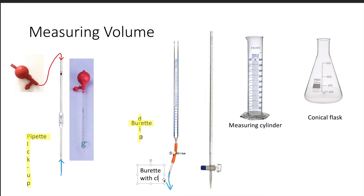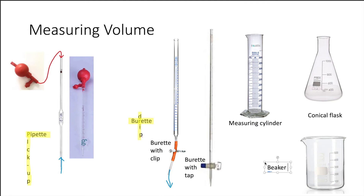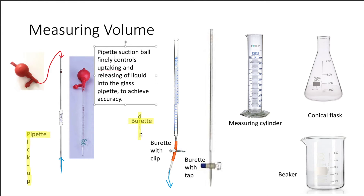For the buret, you fill it to the top where there is a zero mark, meaning you have released zero cm³ of liquid. As you release the liquid, the meniscus at the final point shows how much liquid you have released. If your school lab has the metal clip type instead of the turn-handle faucet, the clip offers more control, although it's a little old-fashioned.